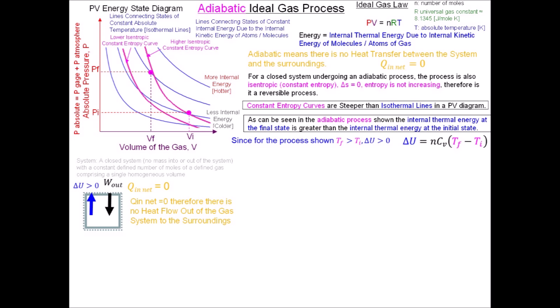In this adiabatic process, the internal thermal energy at the final state is greater than at the initial state, therefore the final temperature is greater than the initial temperature and the change in internal energy is greater than zero. Like every other process discussed, the change in internal thermokinetic energy delta U always equals N, the number of moles, times C sub V, the molar specific heat at constant volume, times the change in temperature T final minus T initial.